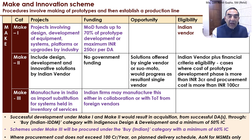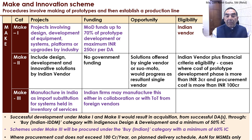MAKE 3 is for manufacture in India as import substitution for systems held in inventory of the services that the SHQ is currently importing. Indian firms manufacture these either in collaboration or with transfer of technology from the foreign vendor. Successful development under MAKE 1 or MAKE 2 leads to acquisition through BUY Indian IDDM with minimum 50 percent indigenous content. Under MAKE 3, procurement is under BUY Indian with minimum 60 percent indigenous content. Where the procurement cost does not exceed 100 crores per year on a planned delivery schedule, acceptance of necessity is applicable only for MSMEs; if no MSME is forthcoming, it can be offered to other vendors.